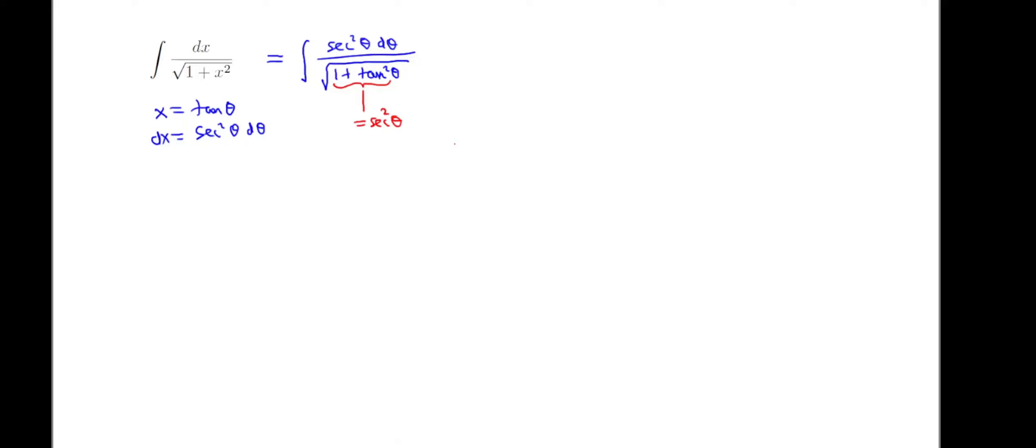The reason that we use this substitution, the reason that it works, is that 1 plus tangent squared theta is equal to secant squared theta. Then we take the square root of that, and we get rid of the radical that way. So we're going to have secant squared theta d theta up top, just a secant theta on the bottom. So we have the job of integrating secant theta d theta. Now I'm going to count on you having seen this before, but this antiderivative is the natural log, absolute value, secant theta plus tan theta.